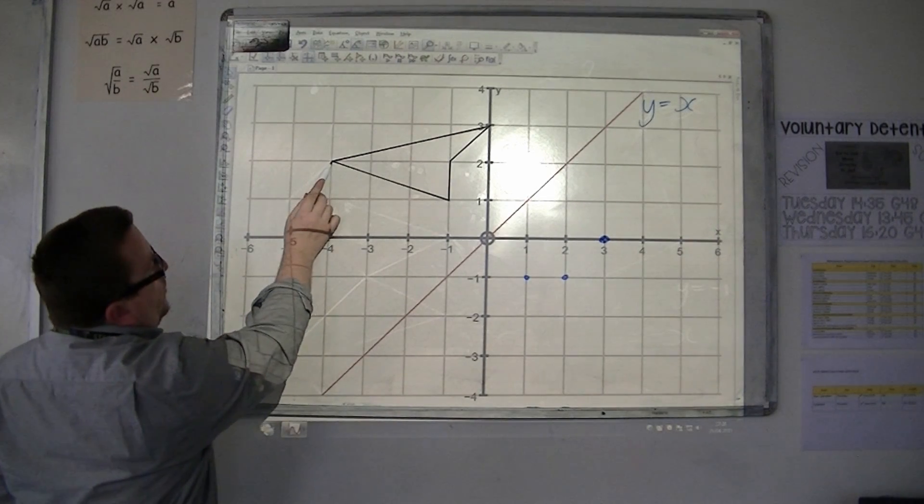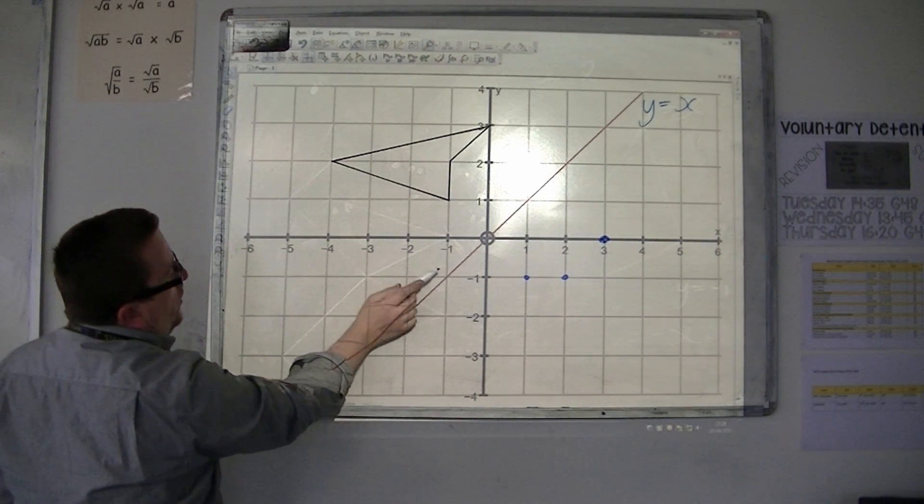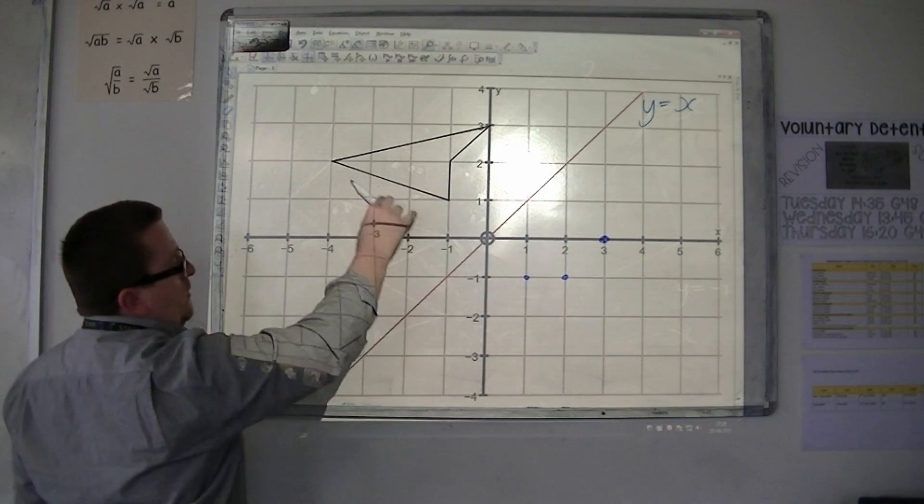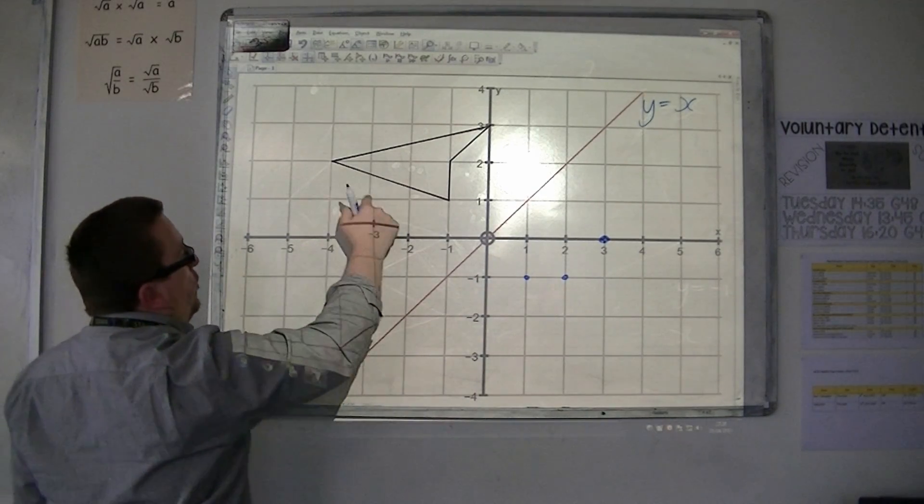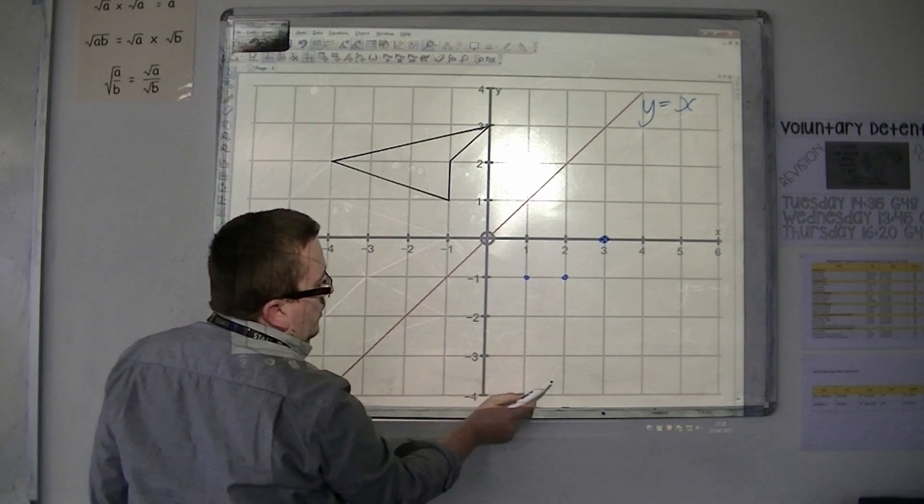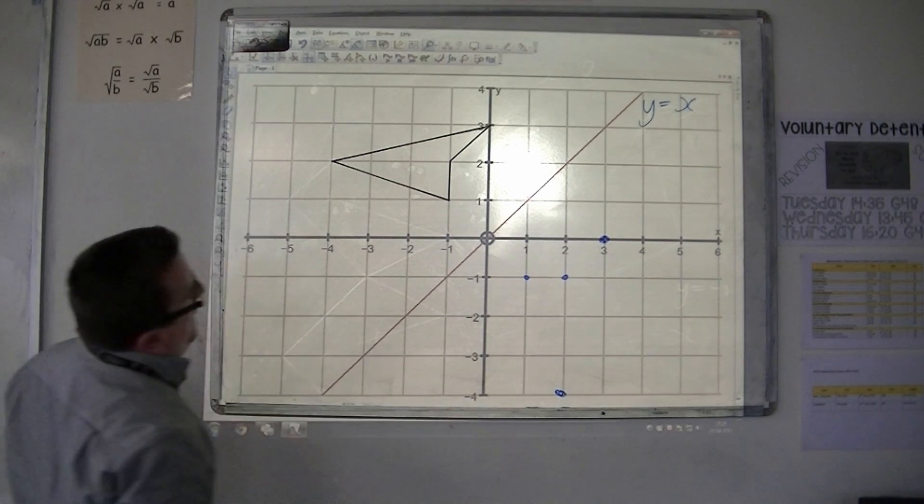And then finally we have this point, which is one, two, three away. So you're always going in that diagonal route, from corner to corner. So one, two, three, so one, two, three. So it would appear down there.